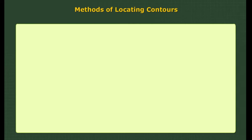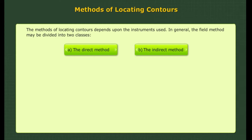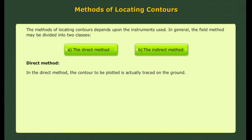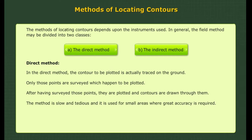Methods of locating contours. The methods depend upon the instruments used. In general, the field method may be divided into two classes: A. the direct method, and B. the indirect method. In the direct method, the contour to be plotted is actually traced on the ground. Only those points are surveyed which happen to be on the contour. After having surveyed those points, they are plotted and contours are drawn through them.